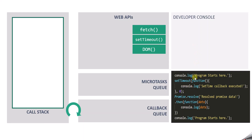Here we have a very simple JavaScript program. First of all, we are logging a message in the developer console. Then we have a setTimeout function with a callback function and a time interval of 0 milliseconds. This means the callback function should get executed immediately, because we are specifying the time interval as 0 milliseconds.